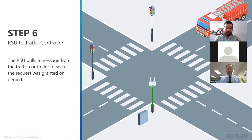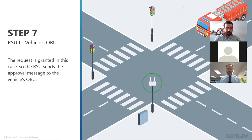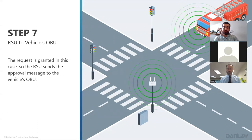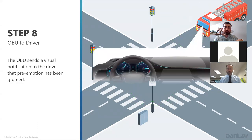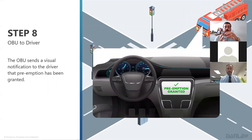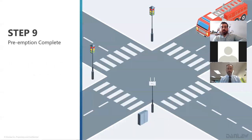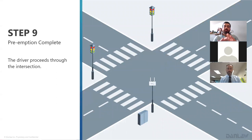The SSM message is sent back to the fire truck's OBU, which displays the result on the HMI — the human-machine interface — showing whether the preemption call is granted or not. If granted, the fire truck proceeds through the intersection and the process completes. That is basically how the preemption application works in a V2X environment.